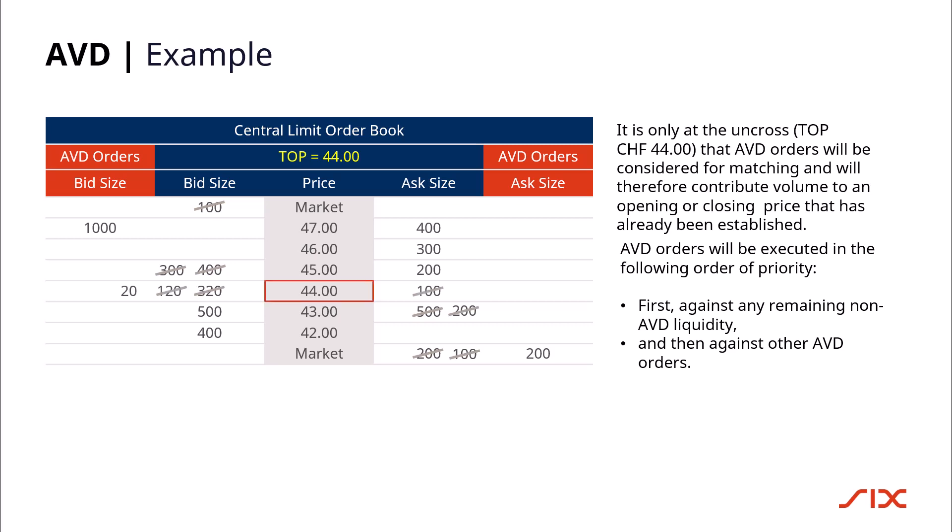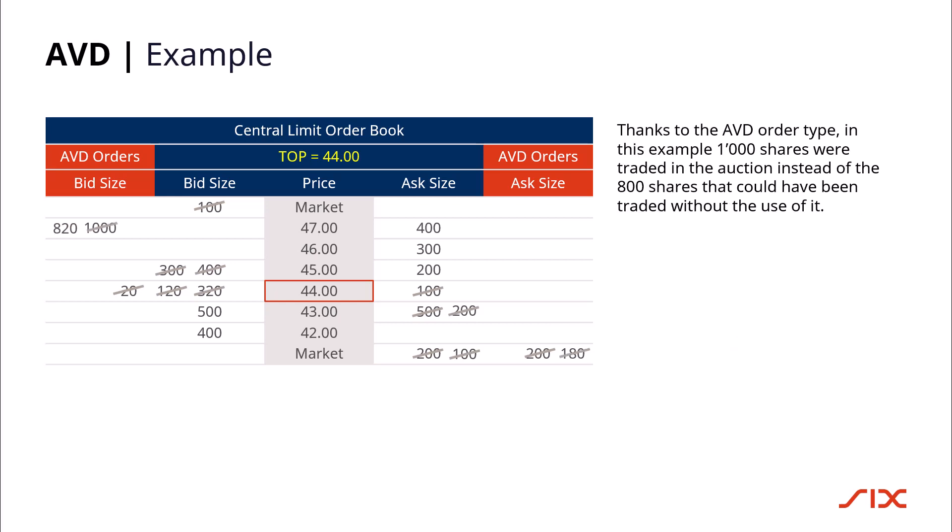AVD orders will be executed in the following order of priority: first, against any remaining non-AVD liquidity, and then against other AVD orders. Thanks to the AVD order type, in this example 1000 shares were traded in the auction instead of the 800 shares that could have been traded without the use of it.